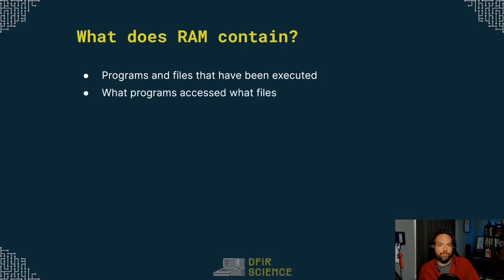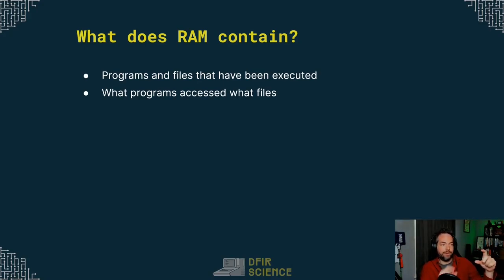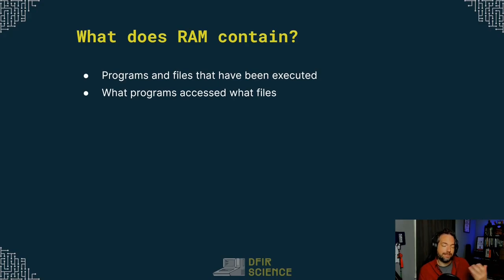What programs accessed what files? This is very interesting, especially for malware analysis — RAM is used a lot for malware analysis. If we have a suspect that says they've never seen a particular file before, but we have a copy of RAM, we can see what programs accessed what files. If we know a certain program was opened and that program was accessing a certain file, and the suspect says they've never done this before, now we have a time that the application was opened and possibly information about the file itself or its contents being loaded into memory — and the program the suspect possibly used to open that file. That's really powerful when you're trying to do an interview or go to court.